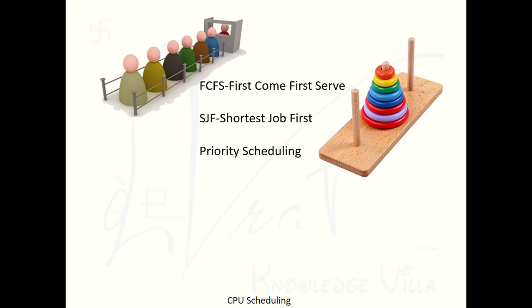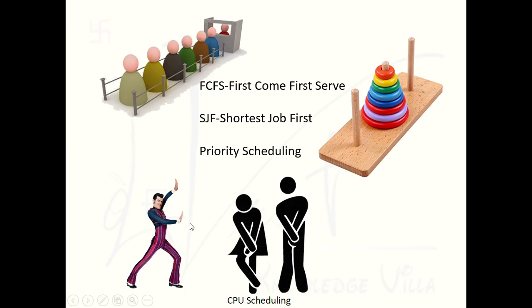There are two types of Priority Scheduling. In Preemptive Priority Scheduling, we can preempt a process — meaning we can stop a process mid-execution and allocate the CPU to another process with higher priority. In Non-Preemptive Priority Scheduling, we cannot stop a process during execution; we must wait for it to complete before scheduling another process.